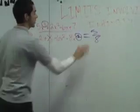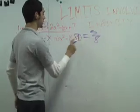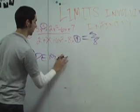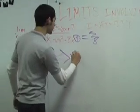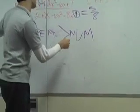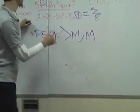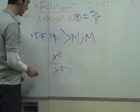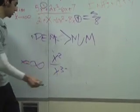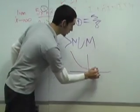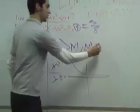Now let's say the denominator degree is greater than the numerator. Using the example x squared over x cubed as x goes to infinity, the number would be a lot smaller. It would never reach zero, but it would be so small that it effectively approaches zero.